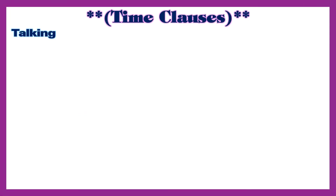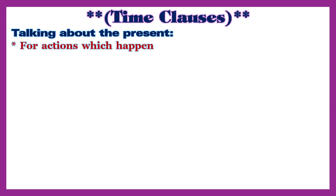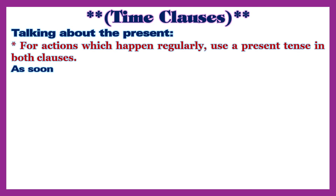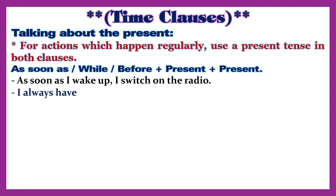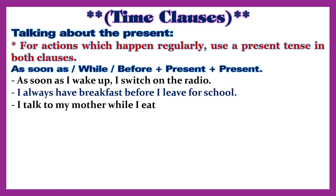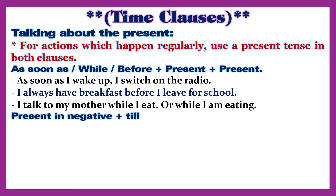Time Clauses: Talking about the present. For actions which happen regularly, use a present tense in both clauses. Conjunctions: as soon as, while, before — present and present. Example: As soon as I wake up, I switch on the radio. I always have breakfast before I leave for school. I talk to my mother while I eat.